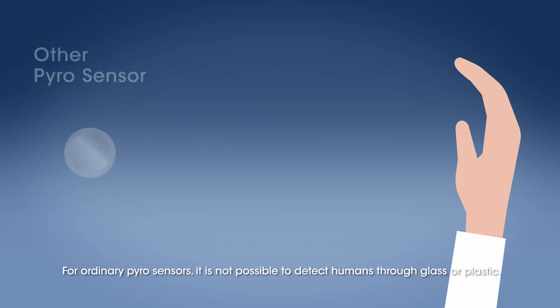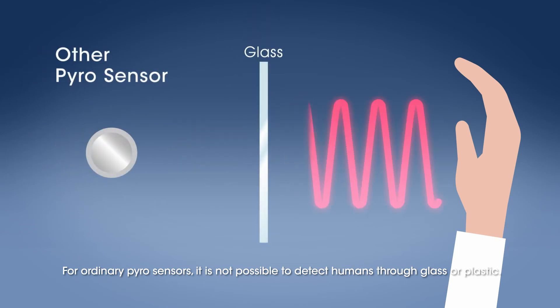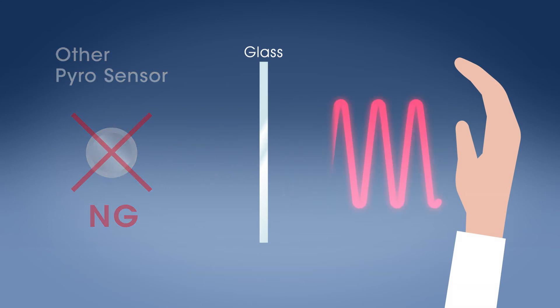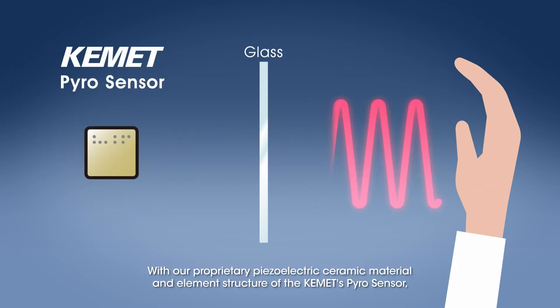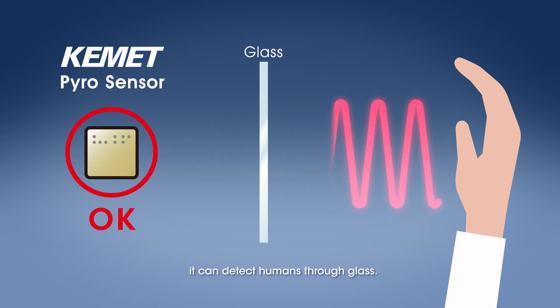For ordinary Pyro Sensors, it is not possible to detect humans through glass or plastic. With our proprietary piezoelectric ceramic material and element structure of KEMET's Pyro Sensor, it can detect humans through glass. This gives even more freedom in the design of the outer appearance of the device.